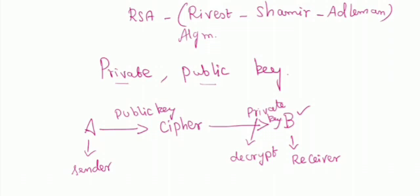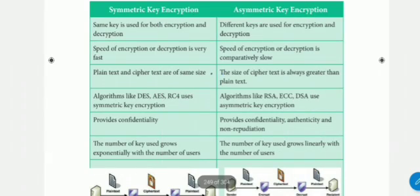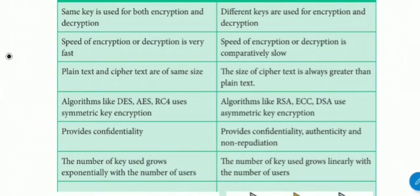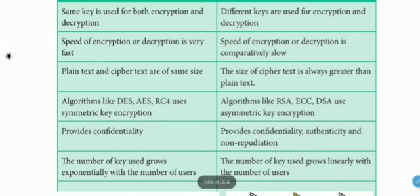Before concluding, we can have a glance at the difference between symmetric key encryption and asymmetric key encryption from the book. The first point: symmetric uses the same key, but asymmetric uses different keys. The second point: symmetric speed is very fast, but asymmetric speed is very slow. The third point: in symmetric, plain text and cipher text are of the same size, but in asymmetric, the cipher text is always greater than the plain text.